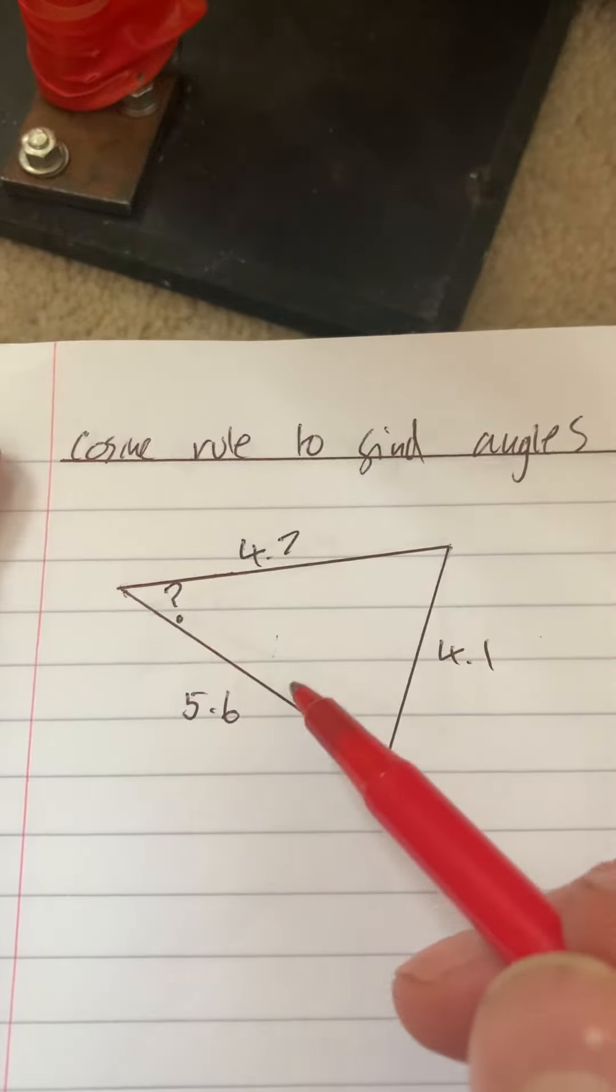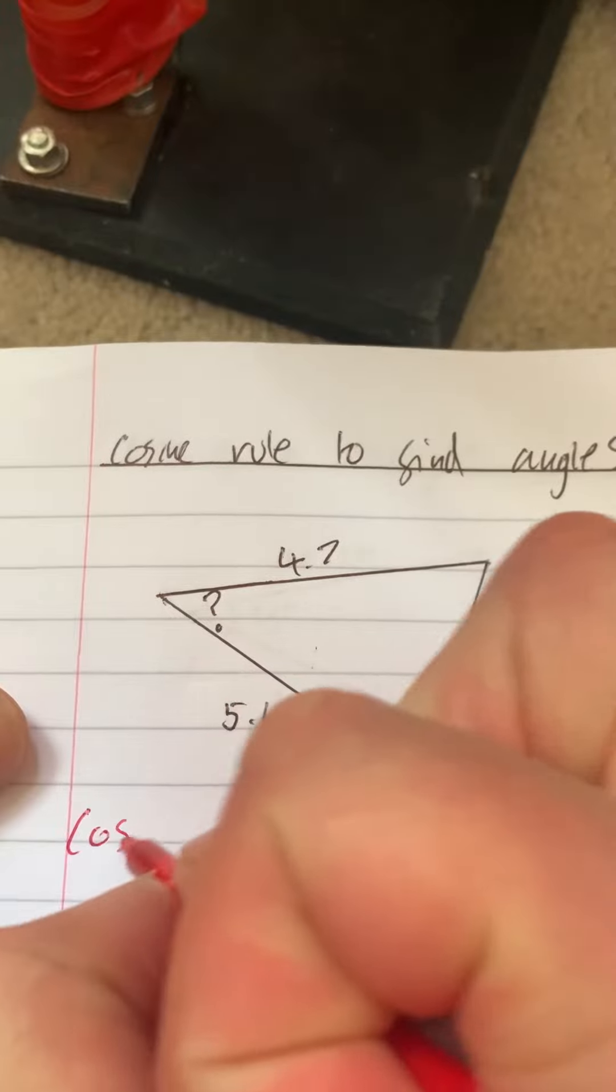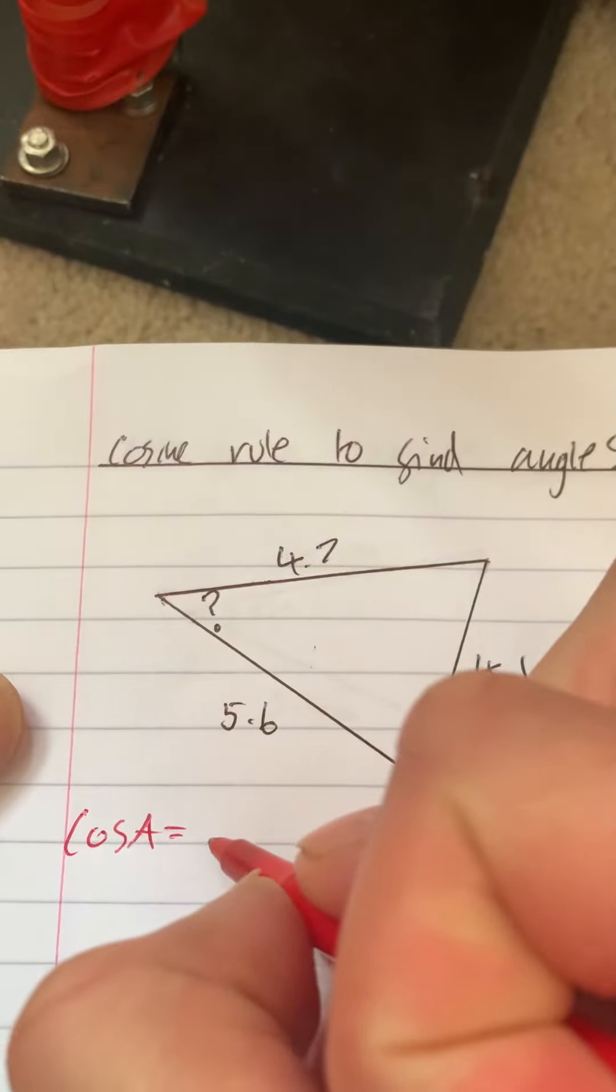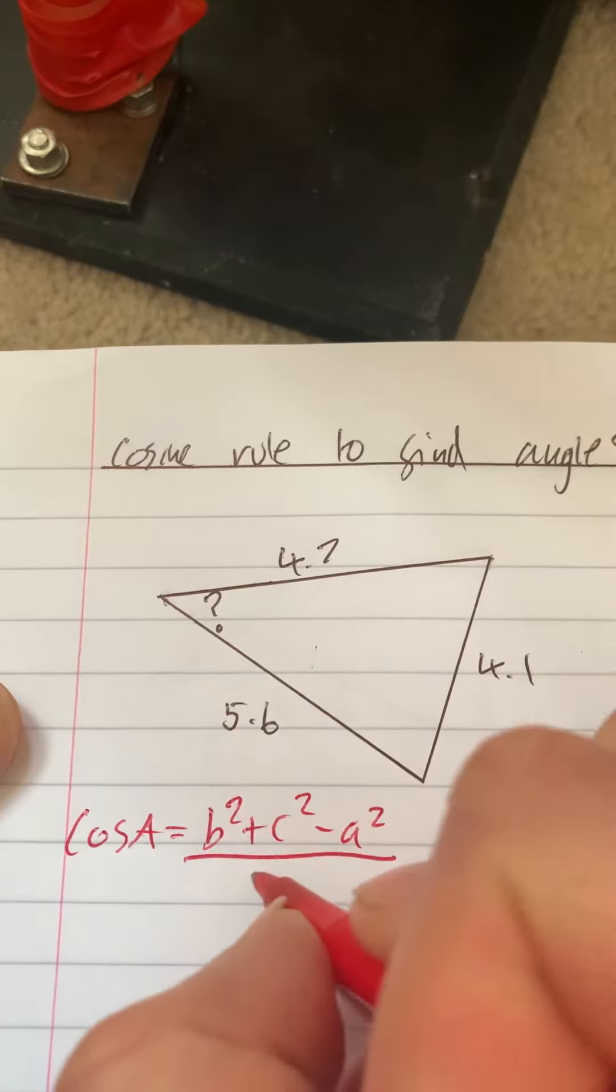Okay, so we're going to try and find these missing angles. Our formula that we rearranged was cos A equals b squared plus c squared minus a squared over 2bc.